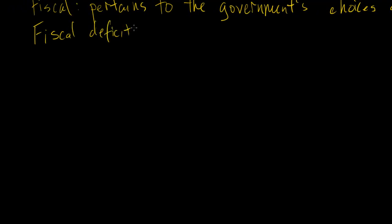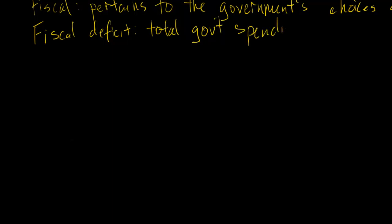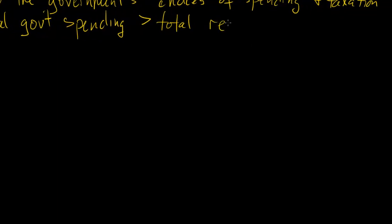You're going to have a deficit any time total government spending exceeds the taxes that they collect — any time spending is greater than total revenues. That should be pretty clear.